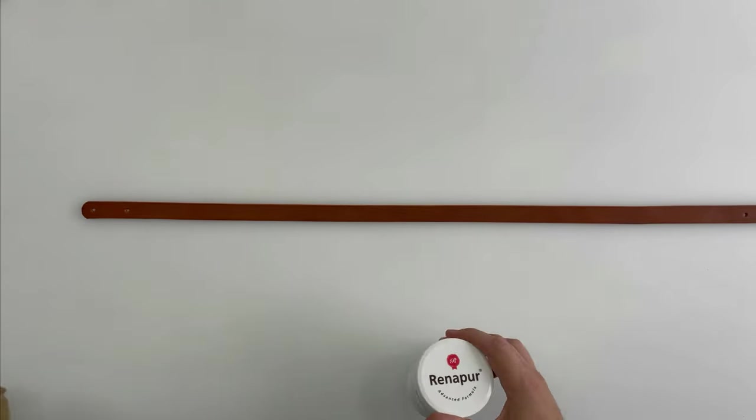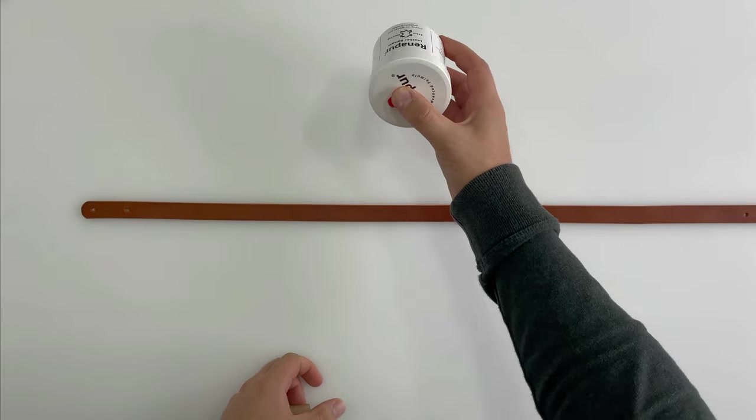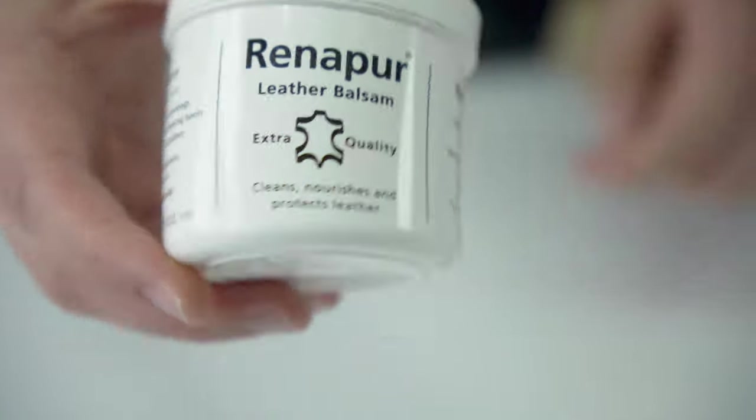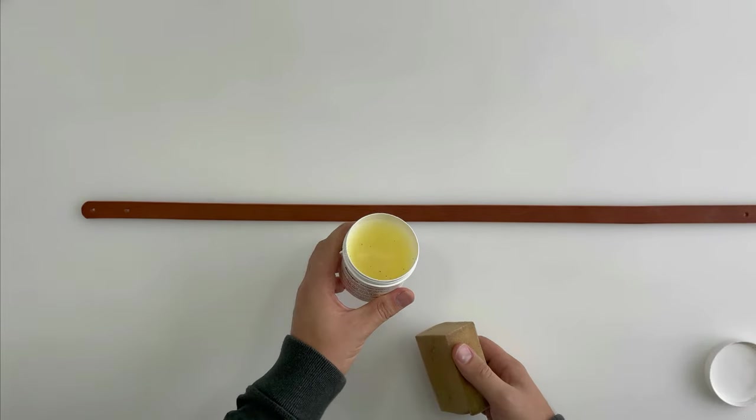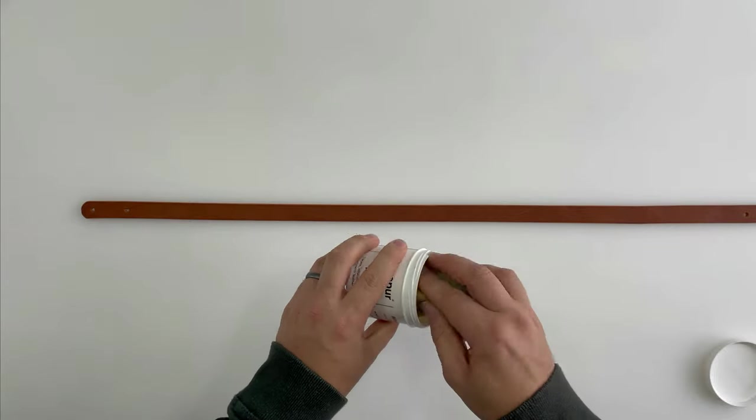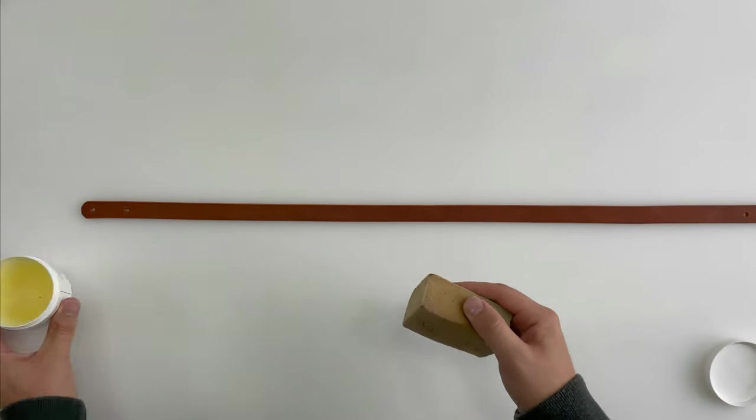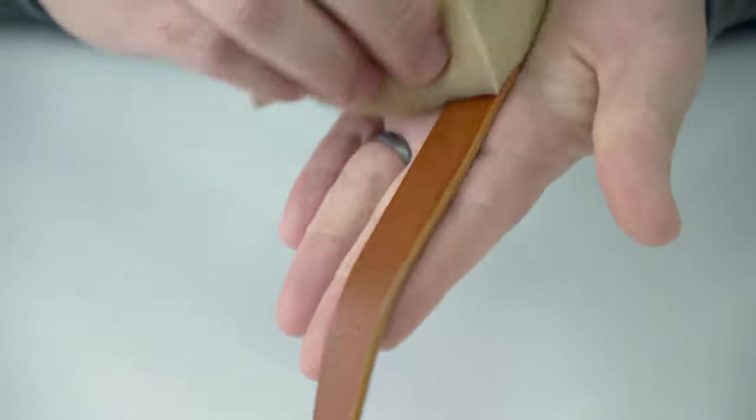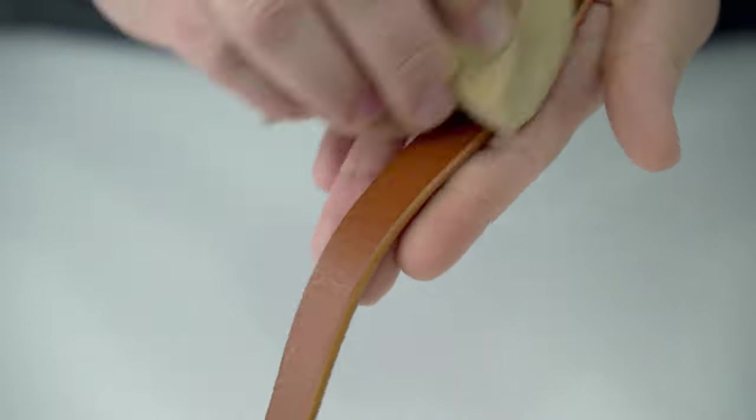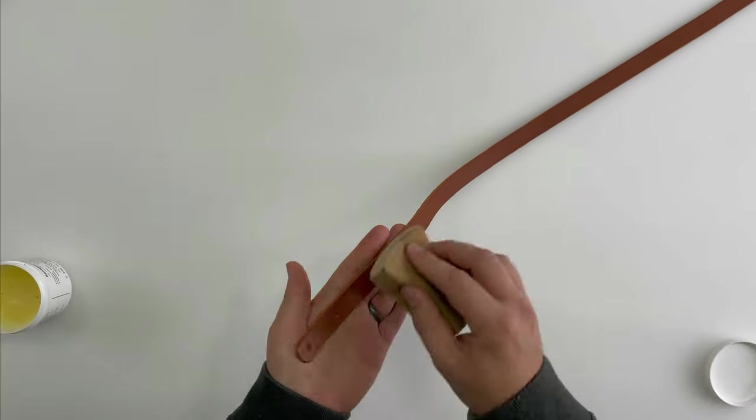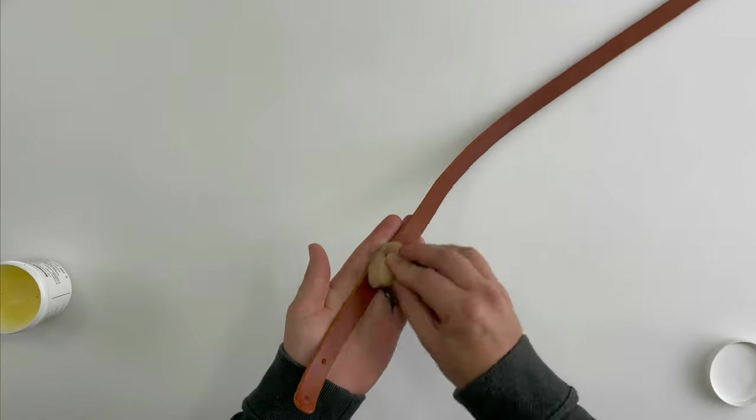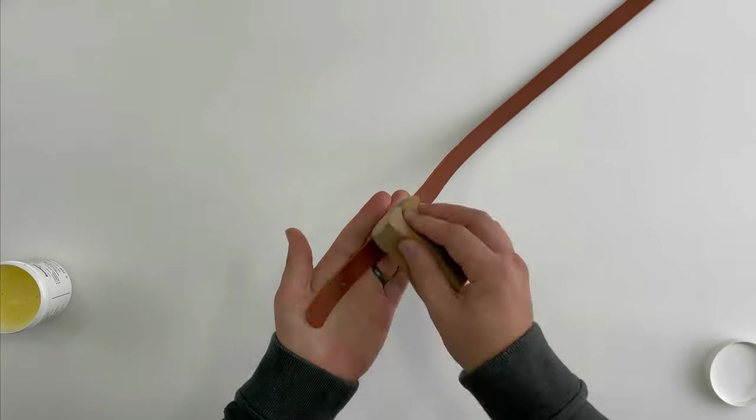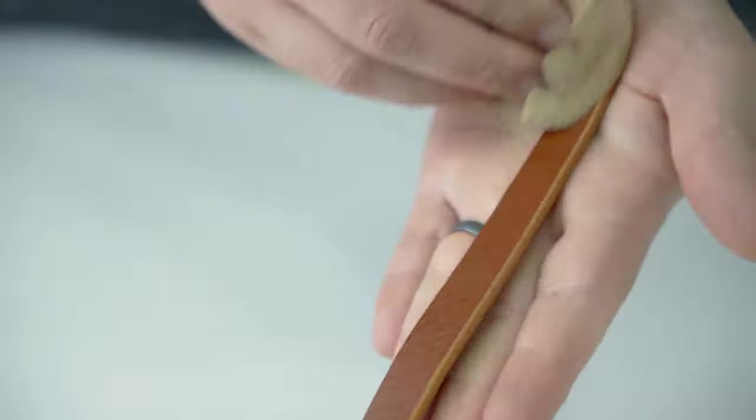Now I'm going to use a bit of Ranipa - I have no idea if I'm saying that correct - but this is a really nice leather balm. It's not particularly cheap but it lasts ages, I bought this years ago. I'm just going to get a sponge in there, don't need much. It also smells amazing. I'm just going to rub it up and down the strap. This helps get a really nice finish to the leather, helps to nourish it, like moisturizing basically.